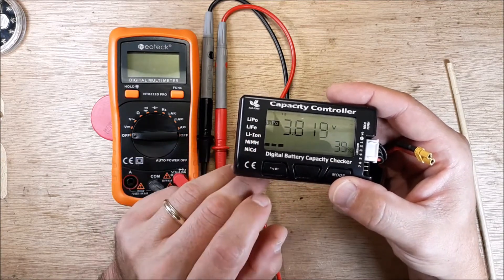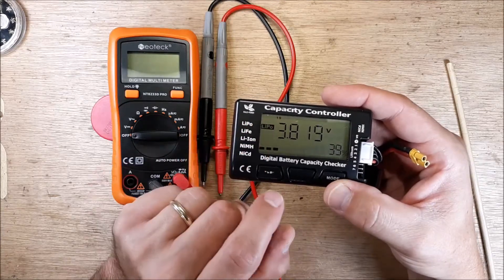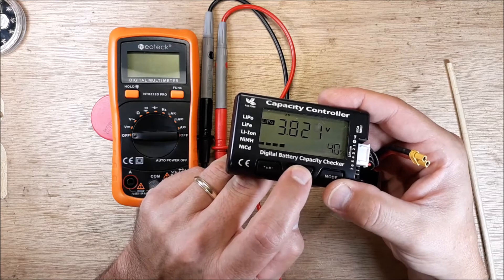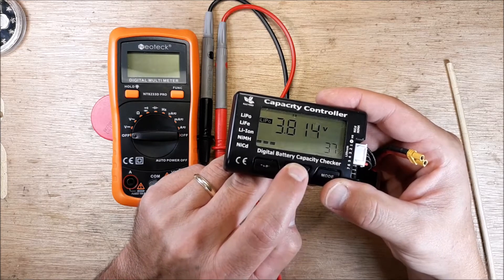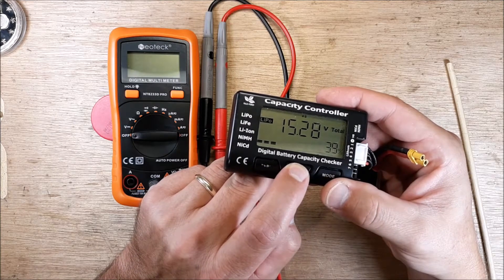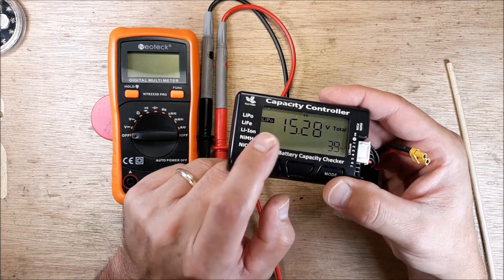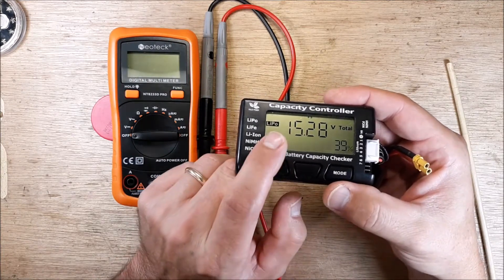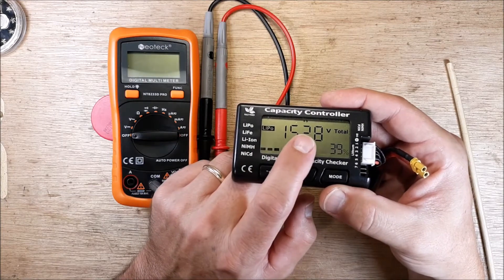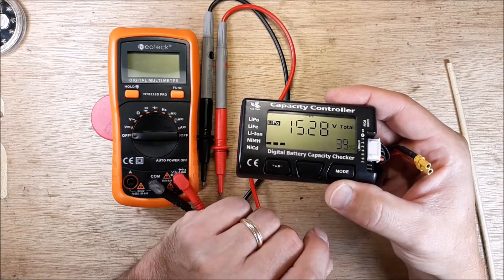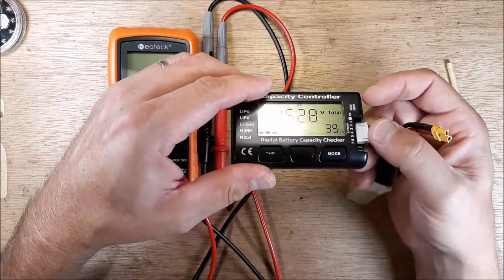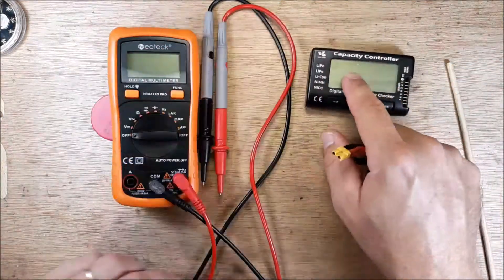This is a LiPo so 3.819, 3.82, 3.81, 3.82. They're all pretty relative and I like to storage charge my packs between 3.80 and 3.85. Somewhere in there is where I like to see them. That's a good storage voltage.